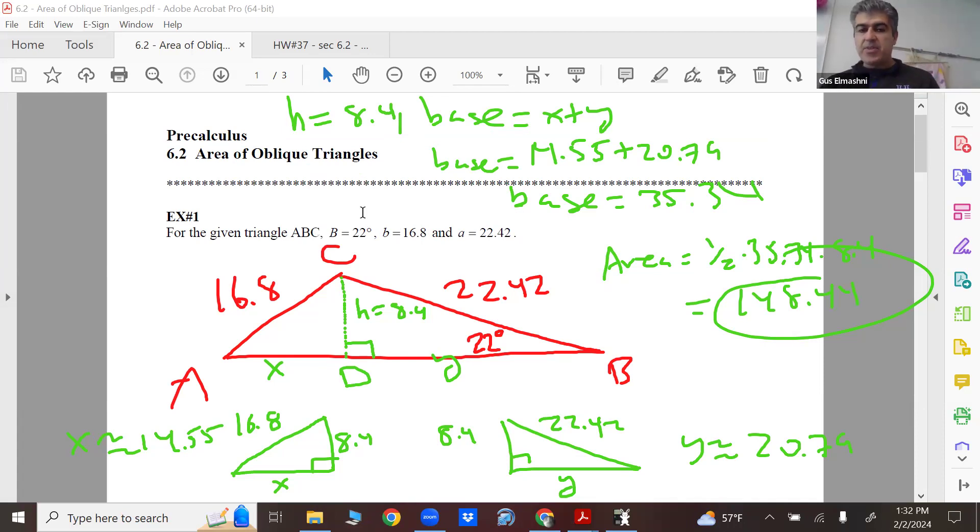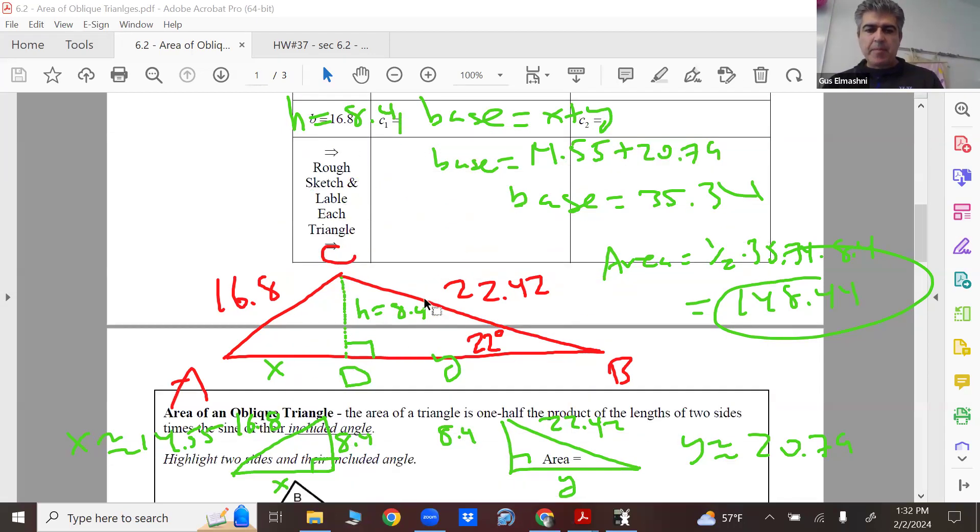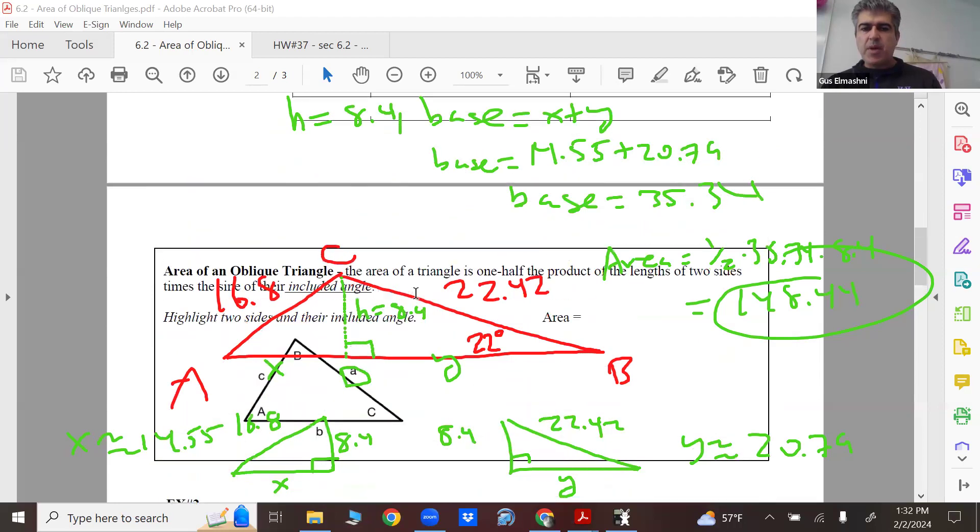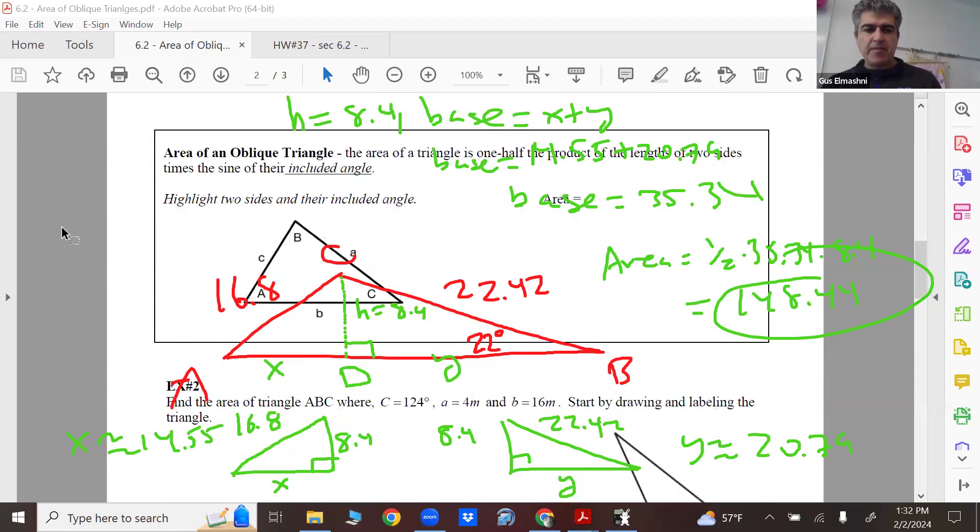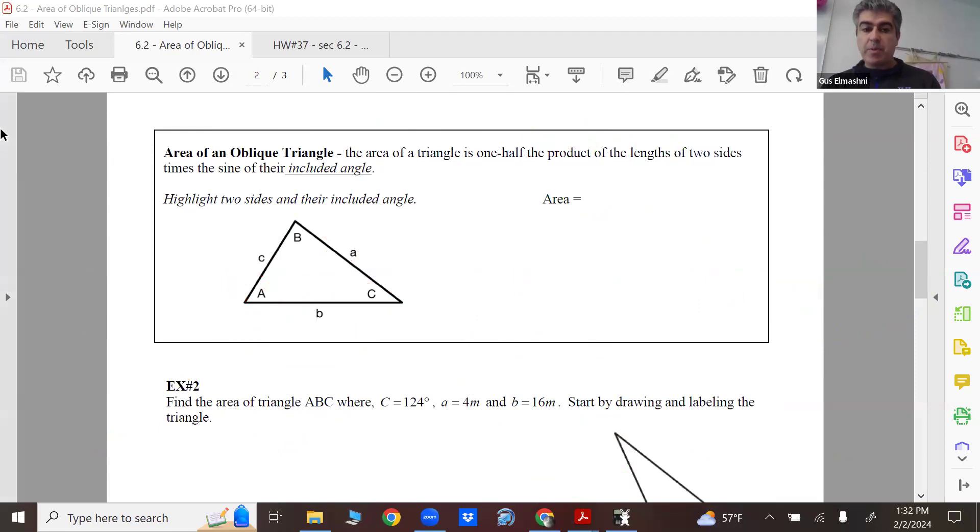But it's not really the most ideal way to do this problem, because apparently there is also a second possibility. There's actually another triangle it could be. But I'm not going to worry about that right now. Let me tell you the formula we're going to use instead. There's actually a more efficient way for doing this problem.